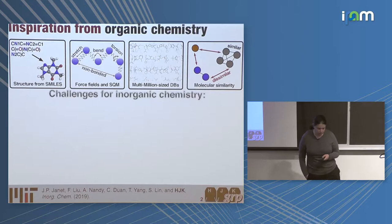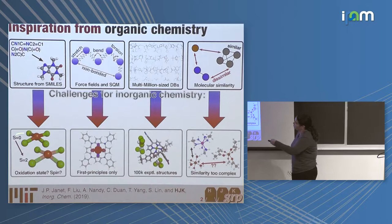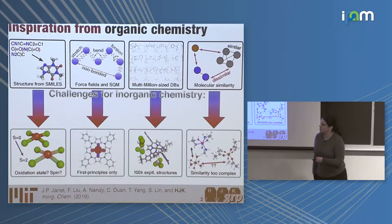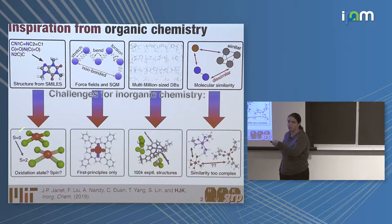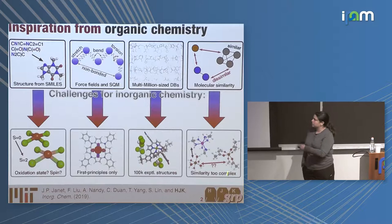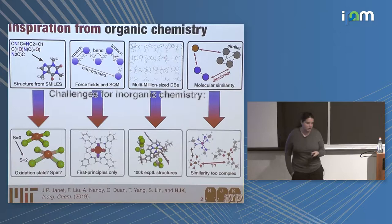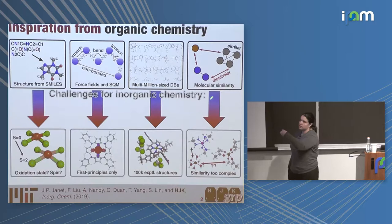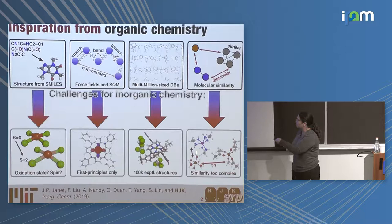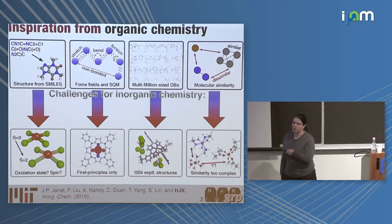If you try to do this, you run into all sorts of issues. You have to think about generating structures from some string language in a spin- and oxidation-state-dependent manner. There are no general-purpose force fields or semi-empirical methods that actually work for open-shell transition metals where there are multiple accessible spin and oxidation states. The types of databases we have are crystallized structures — not a good hypothetical space — and the algorithms that work for molecular similarity estimation fail routinely for this type of space. Complexes that behave most similarly to each other cannot be well represented by just looking at the molecular graphs.